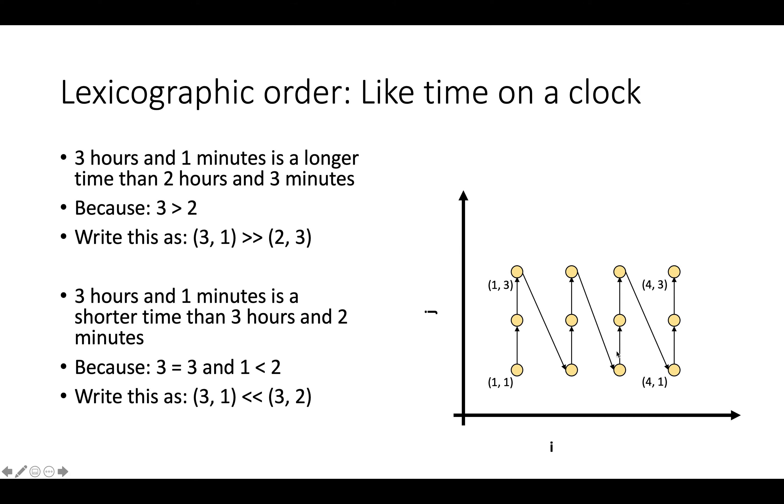Similarly, the point (3,1), which you can think of as outer loop iteration 3, inner loop iteration 1, or if you want to, as 3 hours and 1 minute, is a shorter time than 3 hours and 2 minutes, which would be this middle point here. And so this middle point comes after this first point, because 3 hours is equal to 3 hours, so the first components are the same. But 2 minutes is larger than 1 minute, so 1 is less than 2, which means that (3,1) is lexicographically less than (3,2).